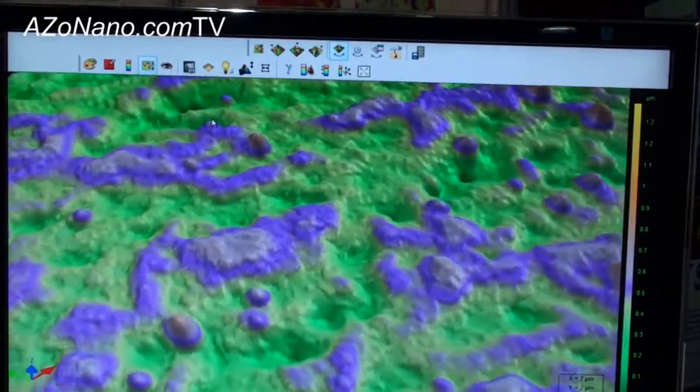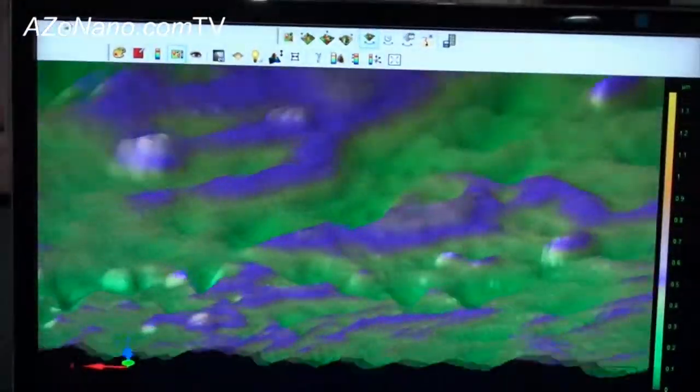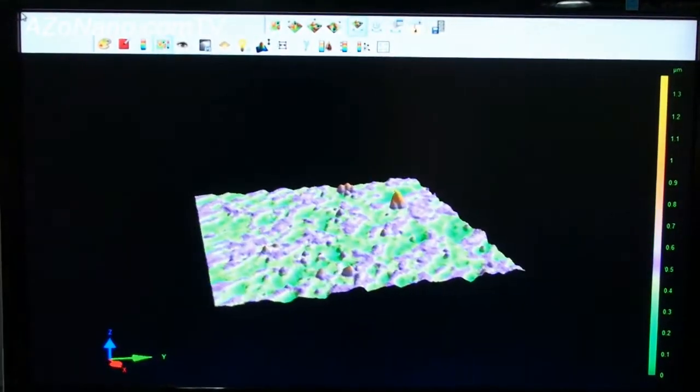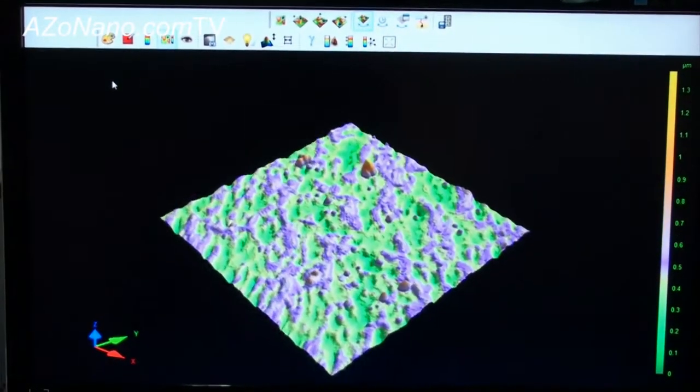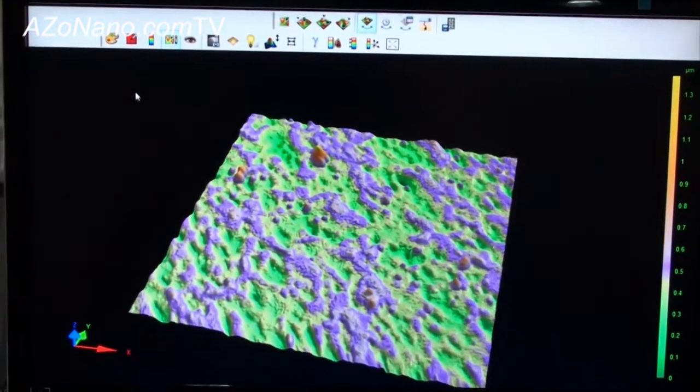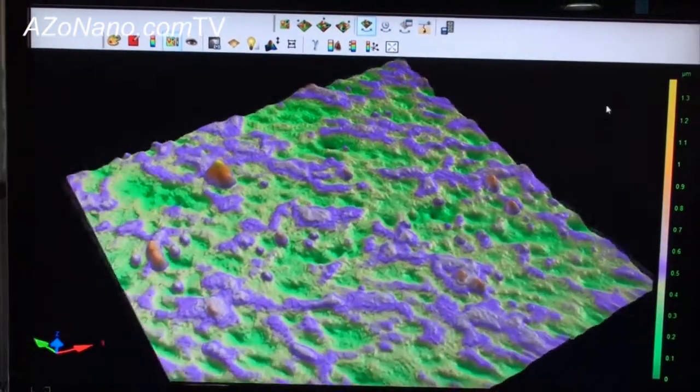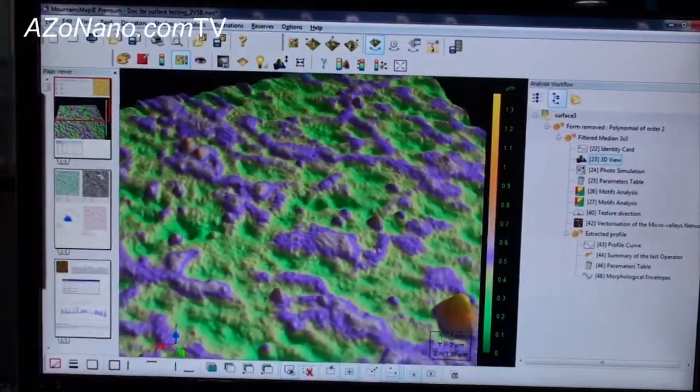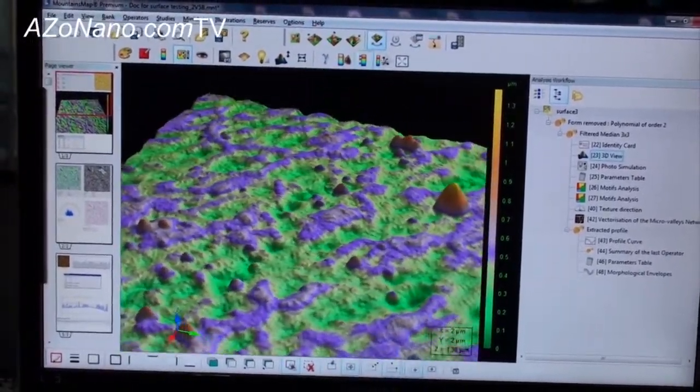As you can see here, there is a surface in 3D. It's a polymer with gold deposition on the top and one of the benefits of the mountain technology is to visualize your surface. So here is a surface of about one micron height with an animation of the rotation.